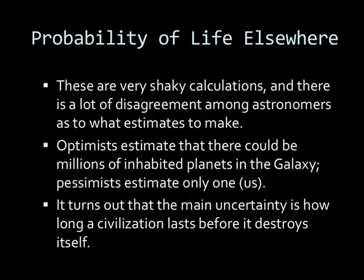These are very shaky calculations, and there's a lot of disagreement among astronomers about what the estimates are. Optimists estimate there could be millions of inhabited planets in the galaxy. Pessimists estimate only one — us. It turns out that the main uncertainty is how long a civilization lasts before it destroys itself.